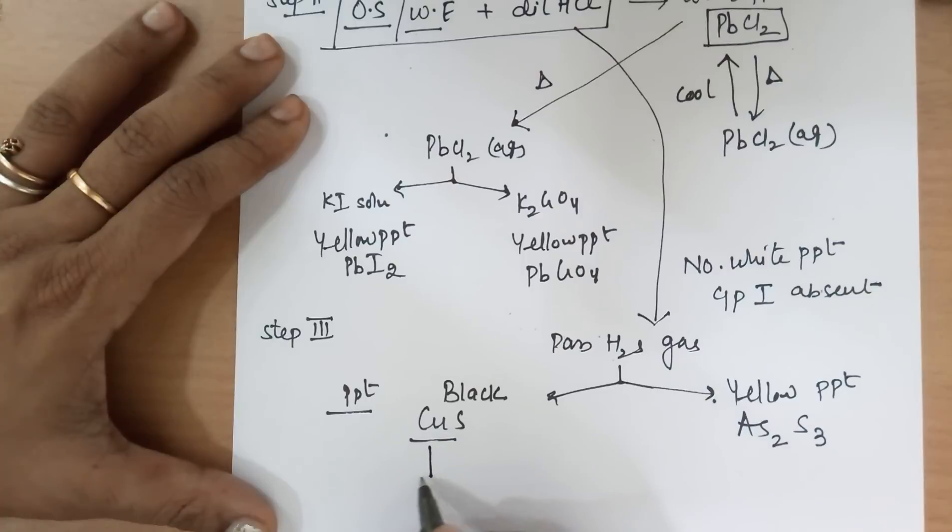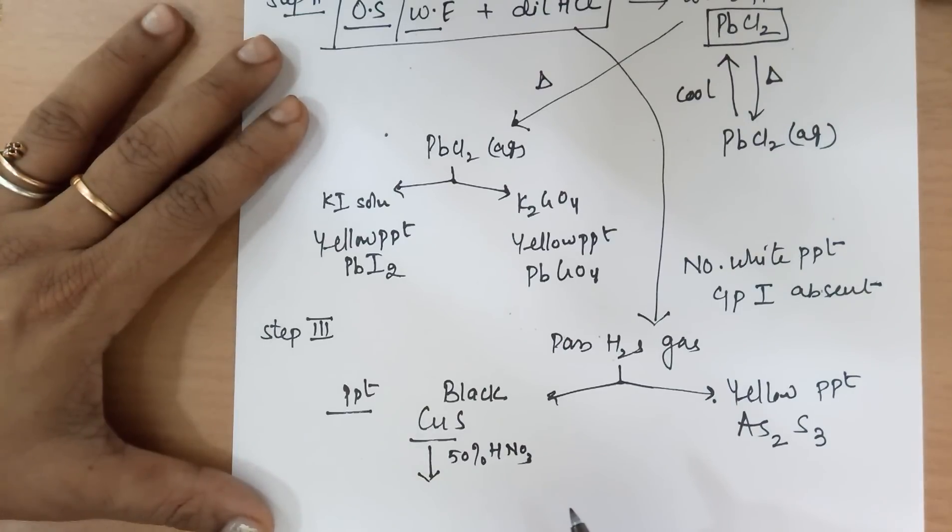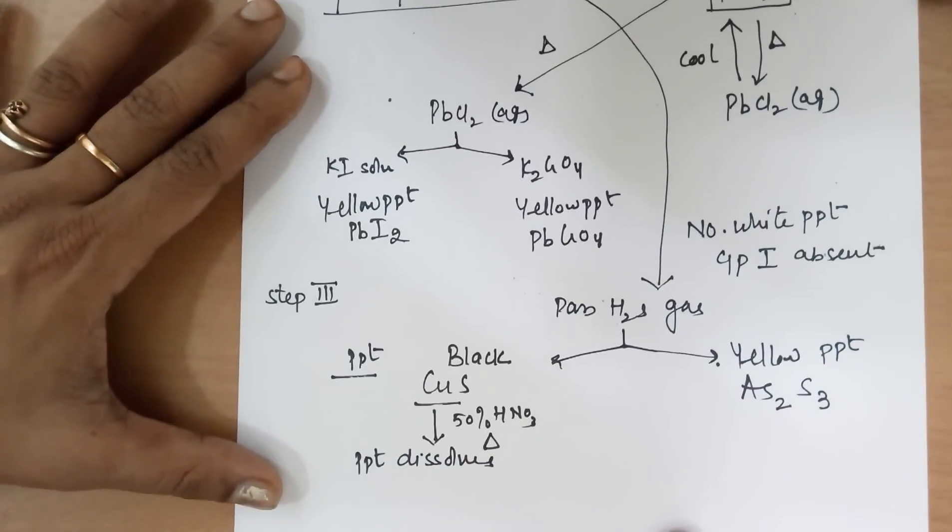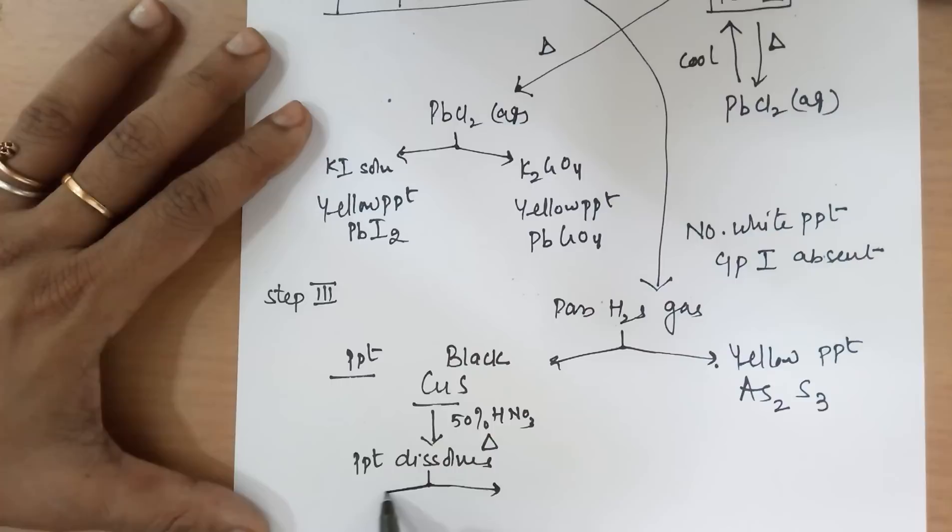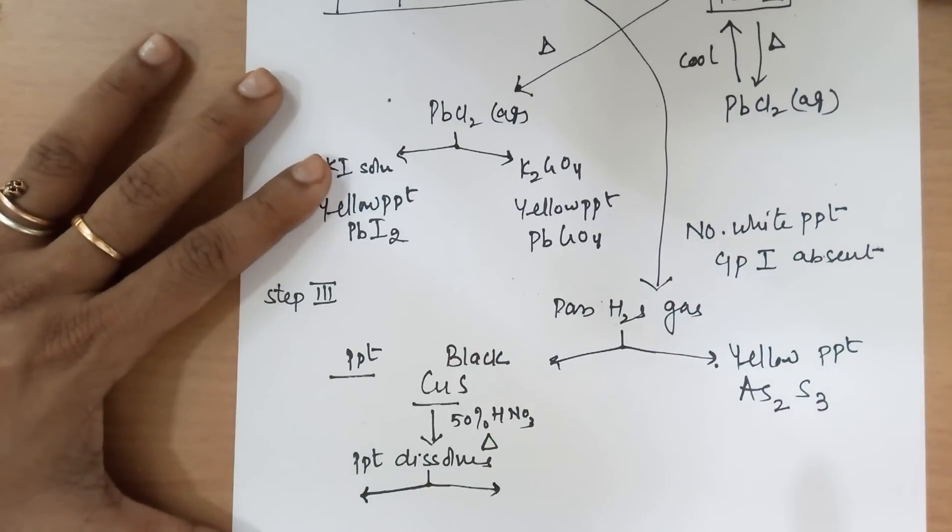In both the PPTs, you add 50% nitric acid. What does that mean? You take around 1 ml of concentrated nitric acid. To this, add 1 ml of water. That makes it 50%. And heat. The PPT will dissolve. Once the PPT dissolves, you can then divide it into two parts. To one part, after cooling—mind you, it's after cooling—add ammonium hydroxide excess. Ammonium hydroxide is a weak base. You are already adding nitric acid. So, to neutralize that nitric acid, the ammonium hydroxide required will be much more. So, have patience. Add excess of ammonium hydroxide after cooling.